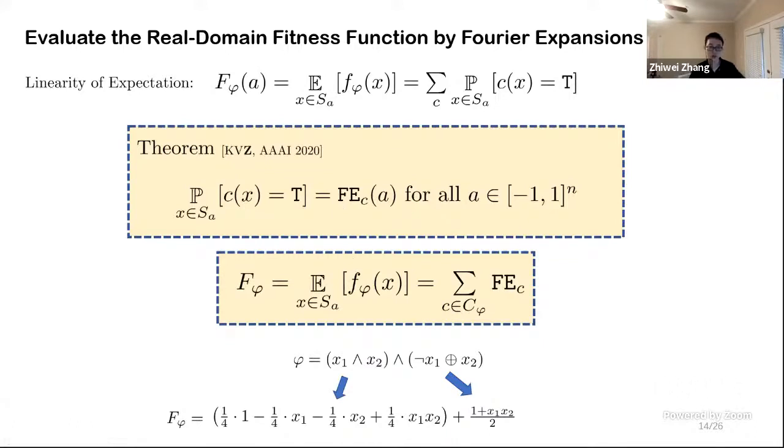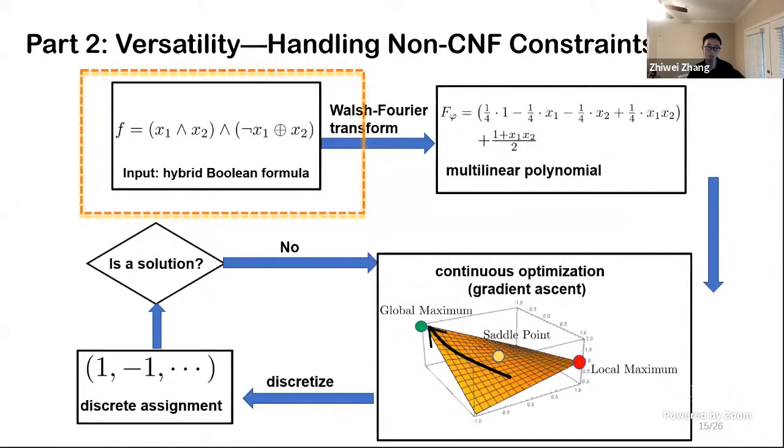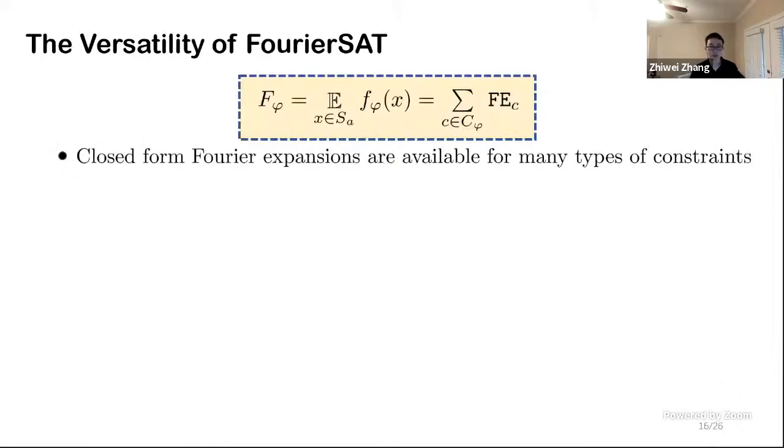So here finished our first part and the second part is about versatility. Since we are motivated by handling non-CNF constraint, we will see how we do it. Recall that our fitness function can be rewritten as the sum of Fourier expansions, so if we have a new type of constraint and we know the closed form Fourier expansions of that constraint, then we are good.